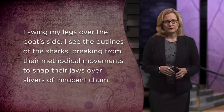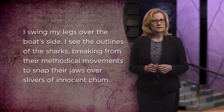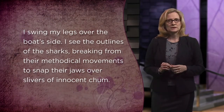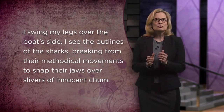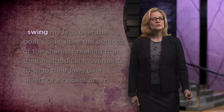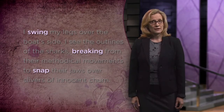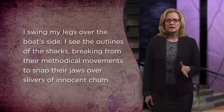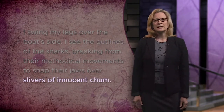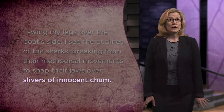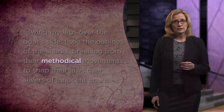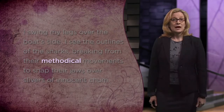What Matt actually writes is far better. He says: "I swing my legs over the boat's side. I see the outlines of the sharks breaking from their methodical movements to snap their jaws over slivers of innocent chum." There is so much more precision here, so much more arresting and evocative detail. Matt uses exact verbs to recreate particular actions — he swings his legs and the sharks break their swimming to snap their jaws. Matt also employs just the right imagery to reveal his uneasiness. The sharks are mere outlines under the water, sinister shapes he can't quite see. And the pieces of chum are innocent slivers, which symbolically stand in for Matt himself, his own vulnerable legs dangling over the side. Matt describes the sharks' movements as methodical — this evokes a sense of viciousness, calculated and cold.